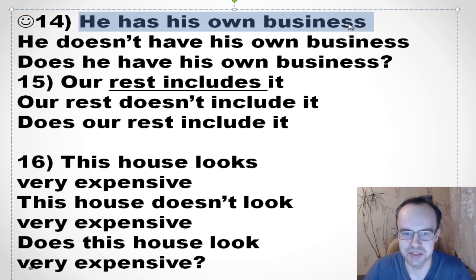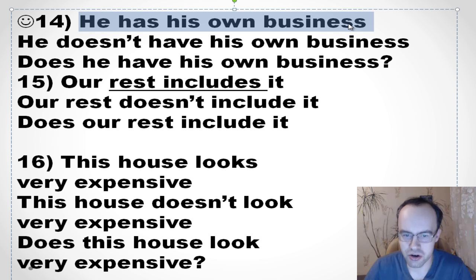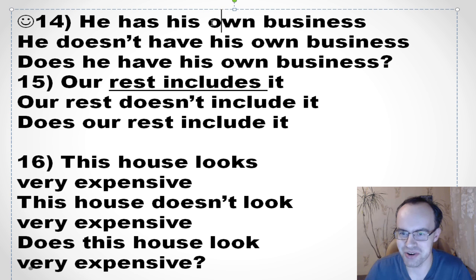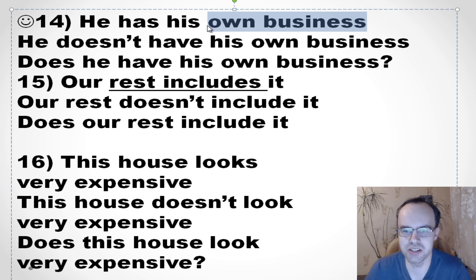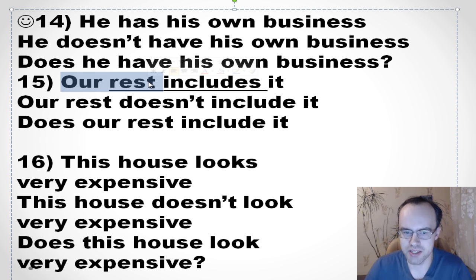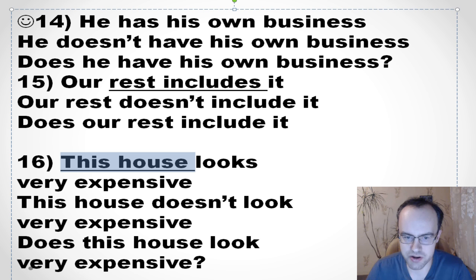'He has his own business. He doesn't have his own business. Does he have his own business?' We're learning grammar, but also learning useful words and phrases. 'Have one's own business' is a great phrase — 'I have my own business, you have your own business.' 'Our rest includes it. Our rest doesn't include it. Does our rest include it?' 'This house looks very expensive' — this house means it. 'This house doesn't look very expensive. Does this house look very expensive?'